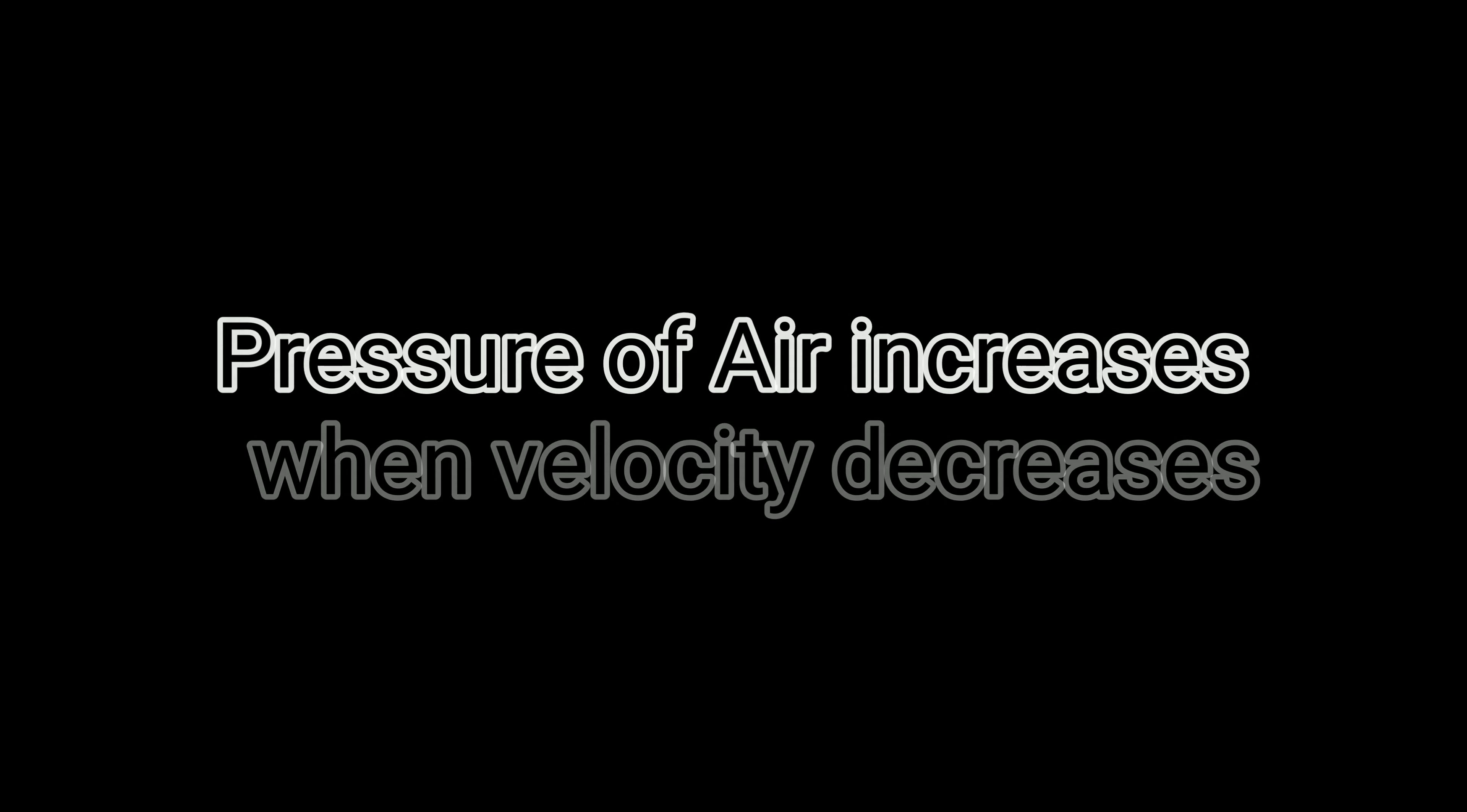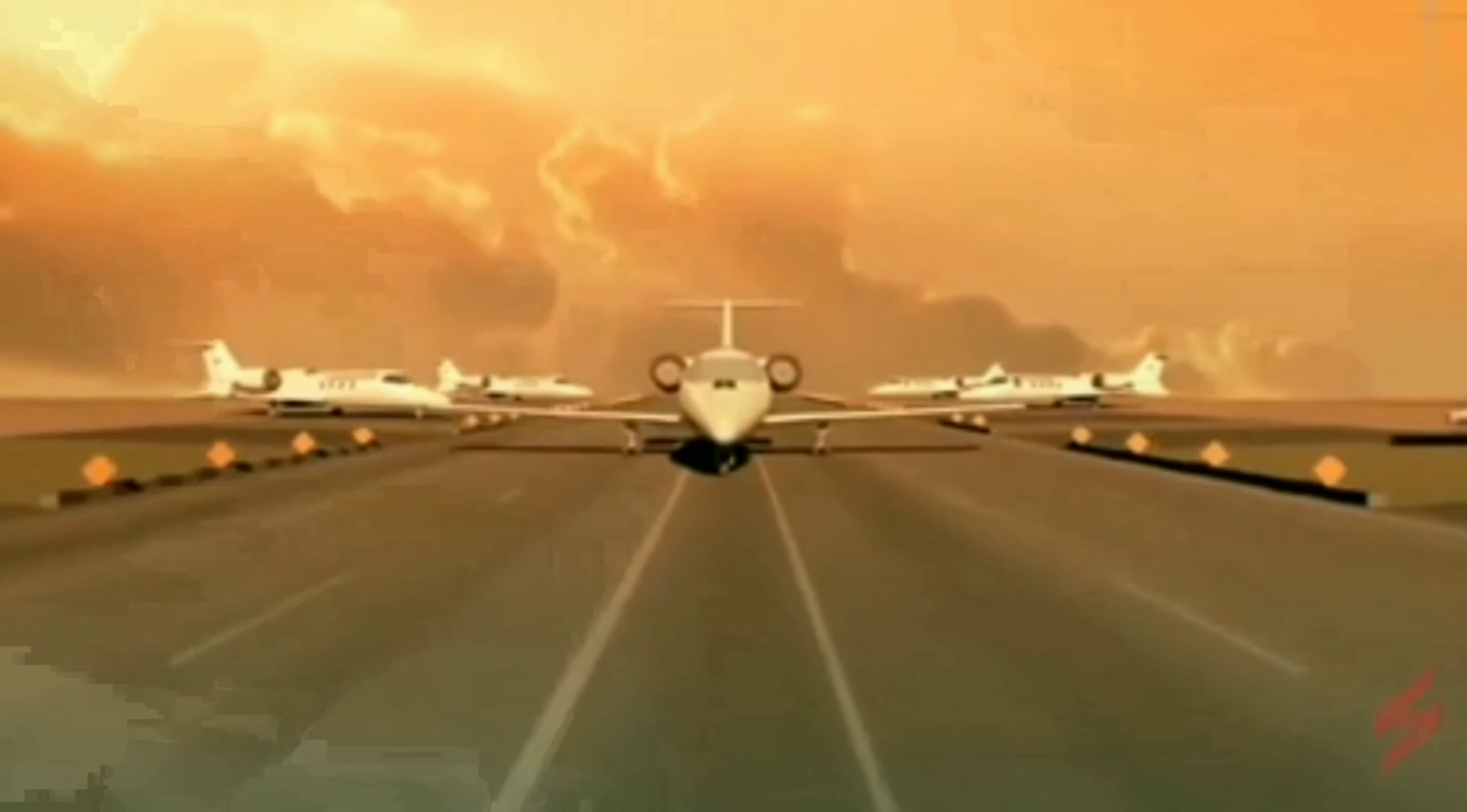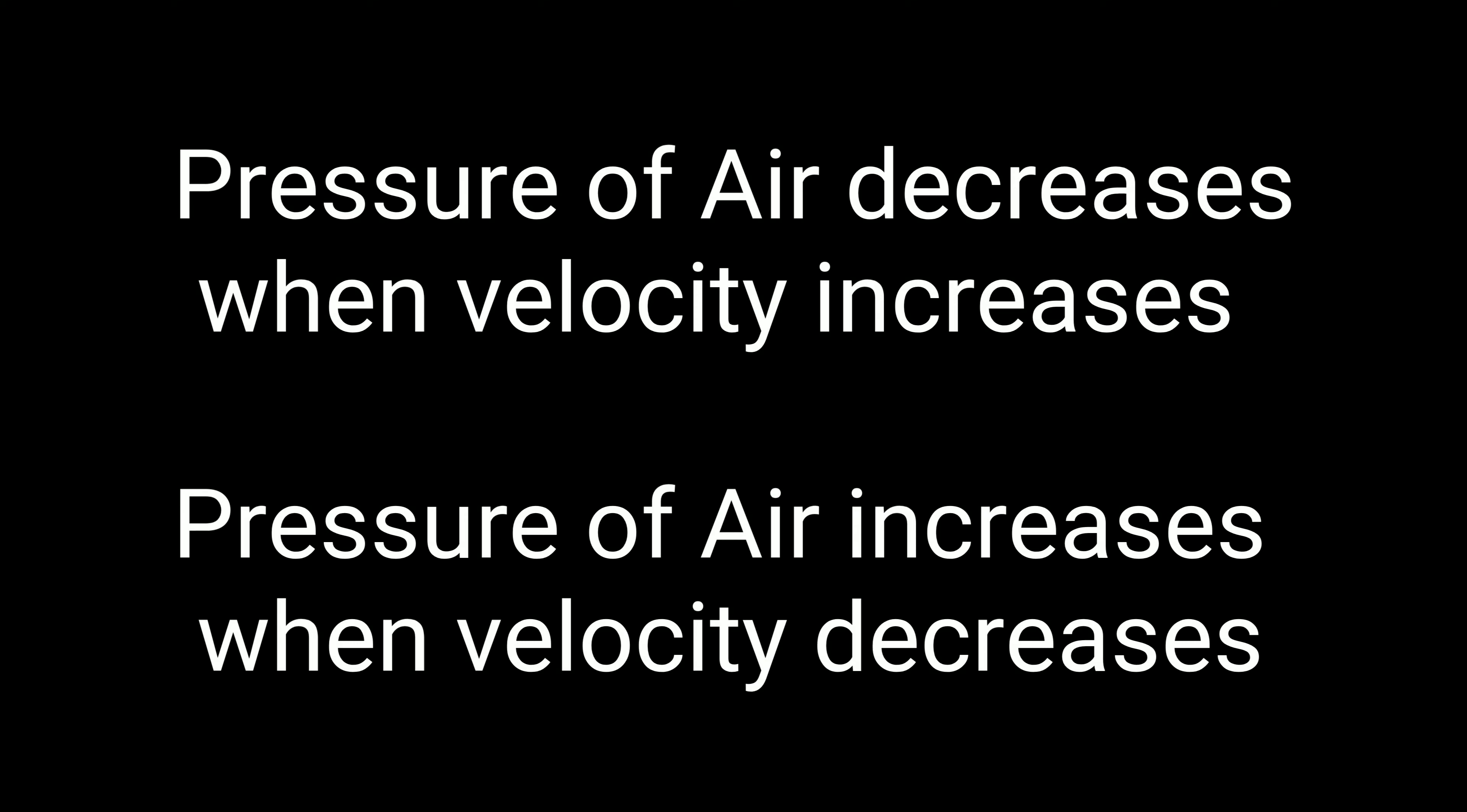If a body is moving through air, the air pressure decreases perpendicular to the direction of the motion, and then the air in its surroundings flows rapidly from higher pressure to lower pressure. Remember, when the pressure of air decreases, velocity increases, and when the pressure of air increases, velocity decreases.